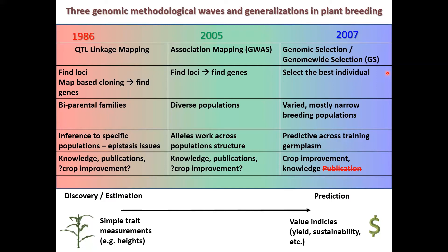In 2005, the focus shifted a little more to association mapping, or GWAS, and the same results have pretty much happened — we don't see a lot of crop improvement from that. But in 2007, building on a lot of other work, Bernardo and Yu came up with this concept of genomic selection or genome-wide selection, and we've seen that rapidly adopted by industry.